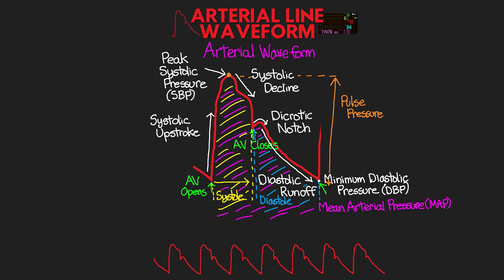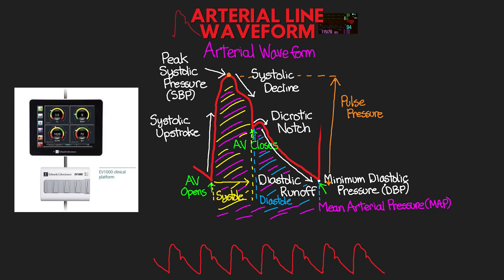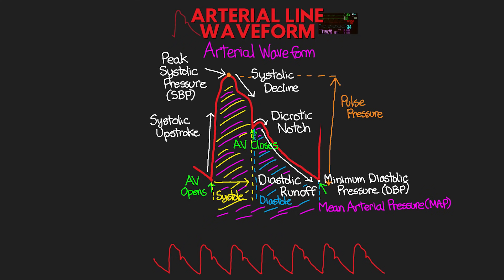Even more information can be attained with analysis from more advanced monitors. While this is going to be beyond the scope of this series, it is useful to understand the basic principles. The slope of the systolic upstroke — how quickly the upstroke is going — is actually correlated to contractility. The area under the systolic curve is a representation of our patient's stroke volume, which can then be multiplied by the heart rate to determine cardiac output. The slope of our diastolic runoff is going to be correlated with vascular resistance.